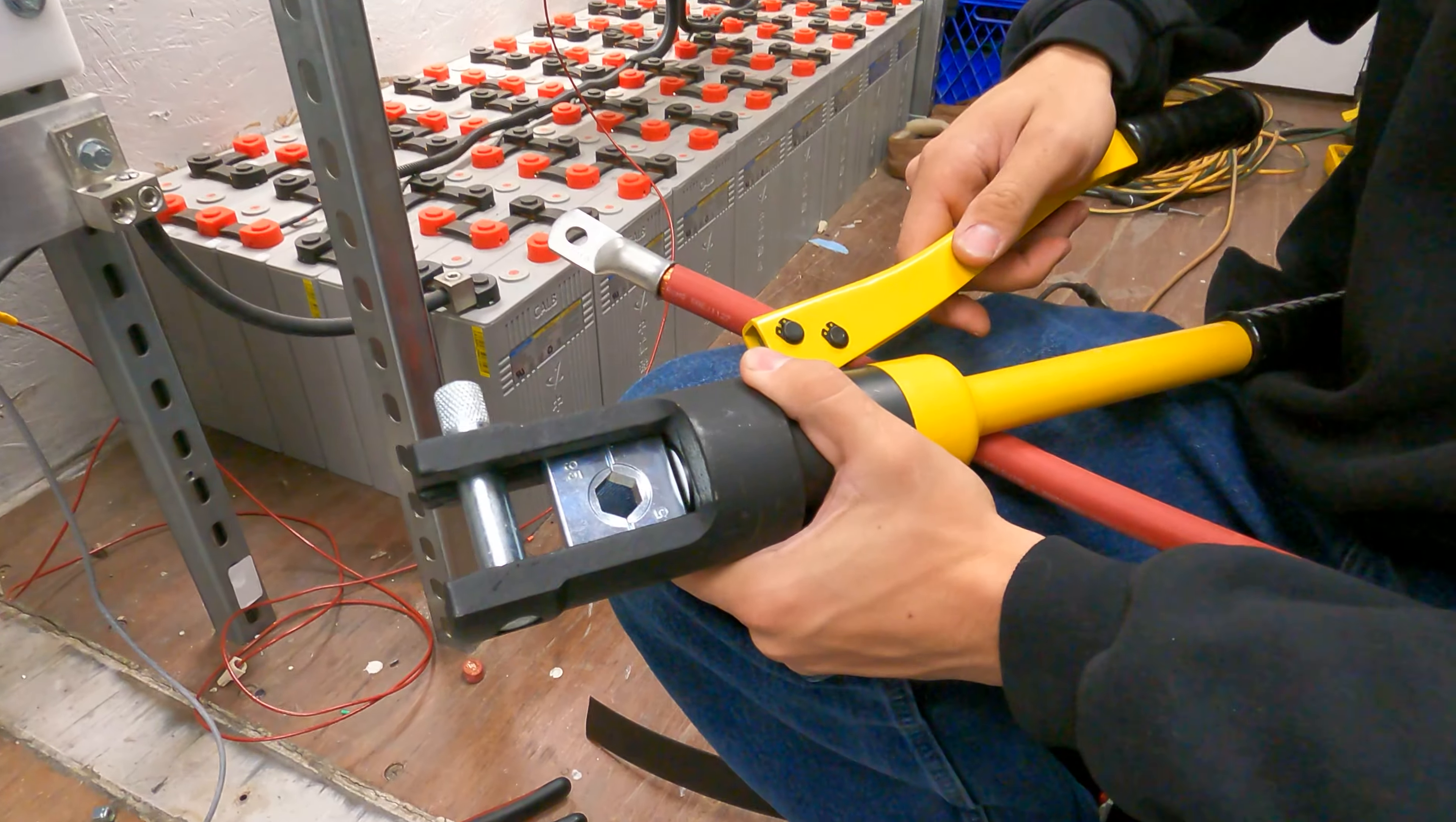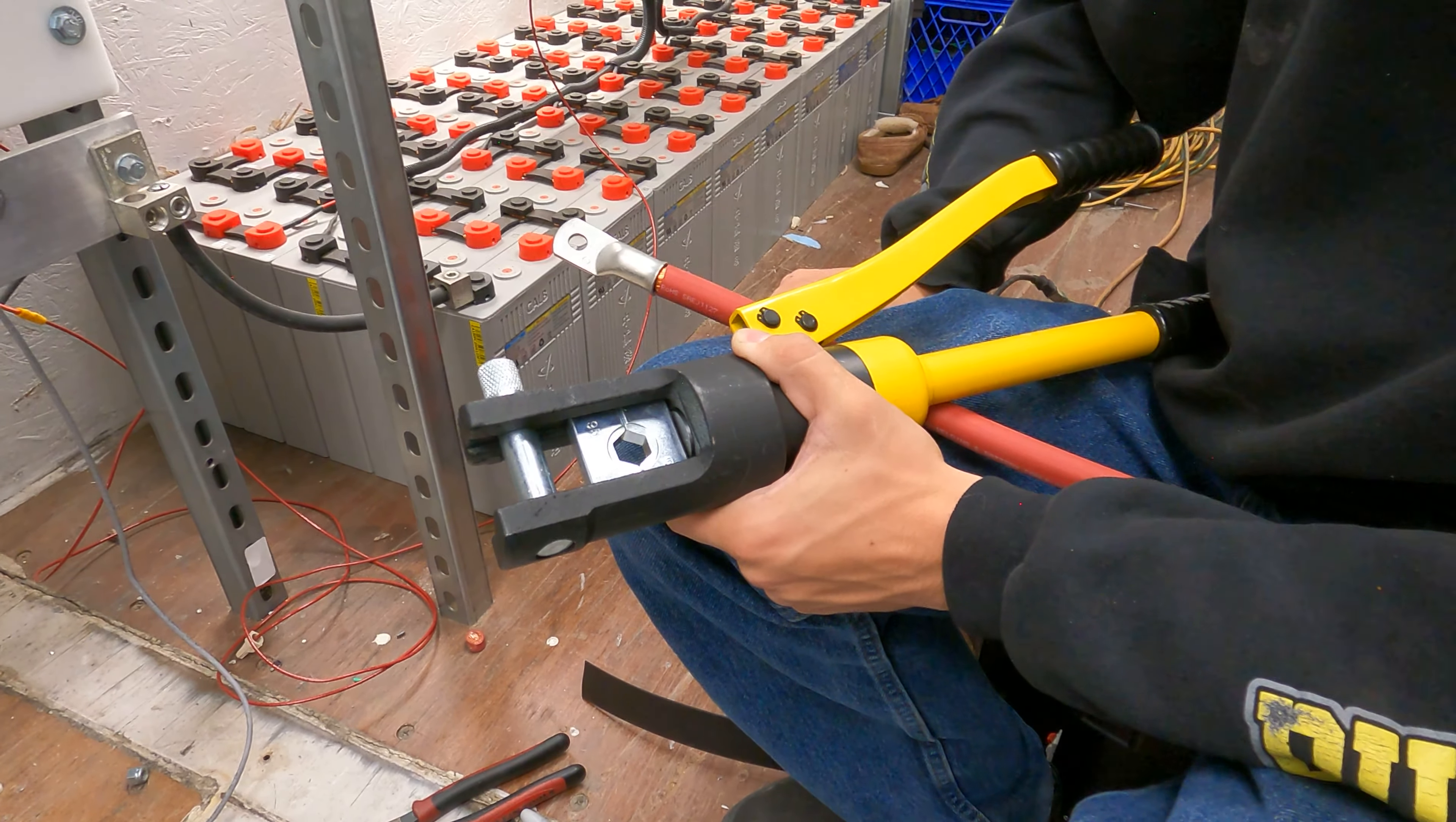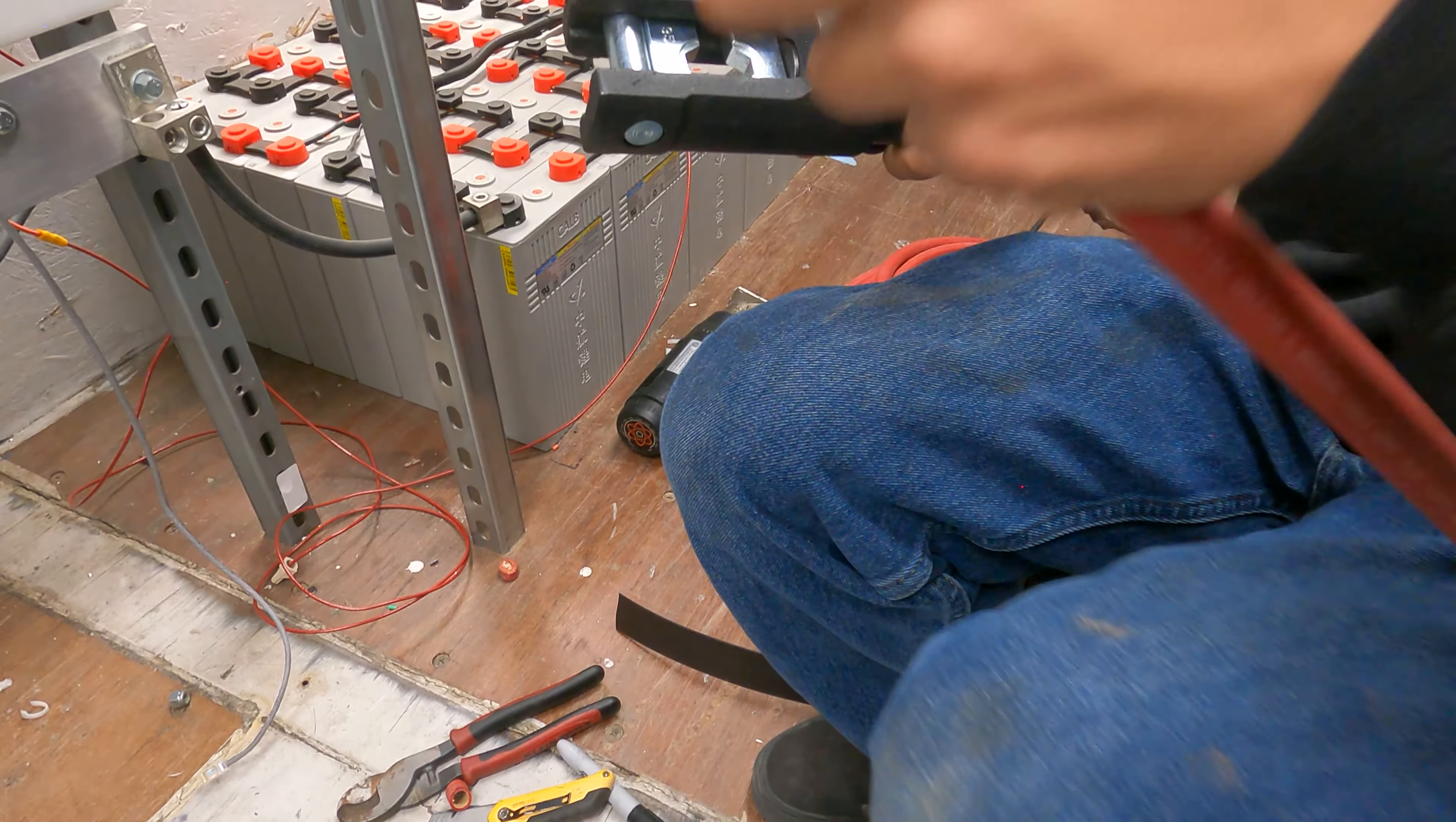Okay, so here on my hydraulic crimping tool, I have the correct die installed. In this case, it's stamp 95 for this 4-0 cable. This is in millimeters square, I believe, but there's a conversion chart and it crosses over to 4-0. So I'm going to spread these lugs out. And by the way, if your tool is not already, you're going to want to loosen it up by turning it to off and then close it back up so that now the dies are spread apart.